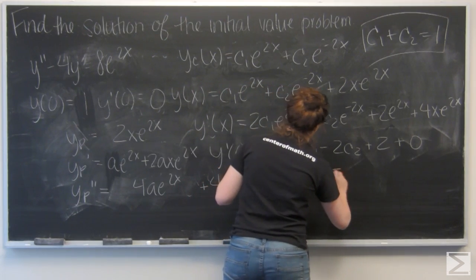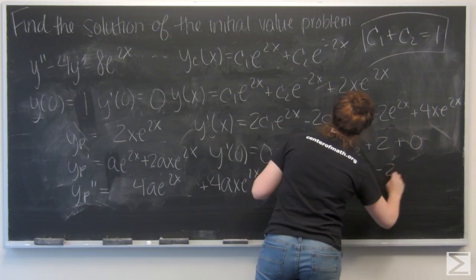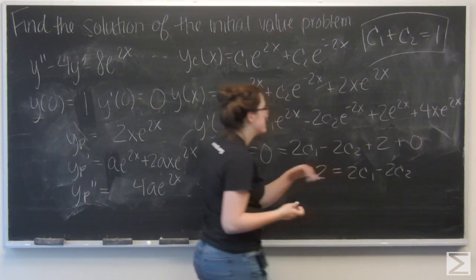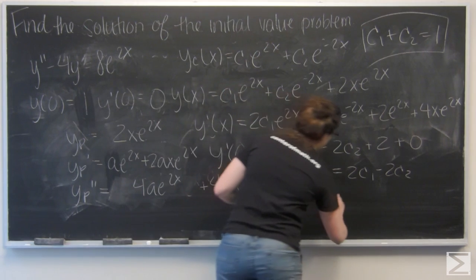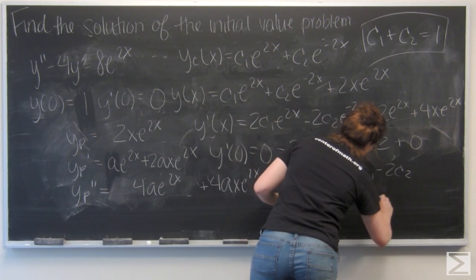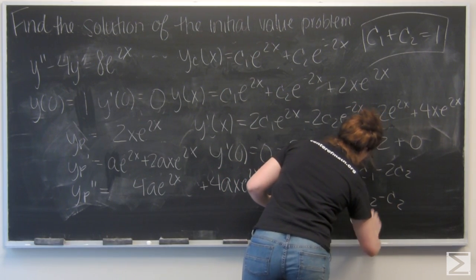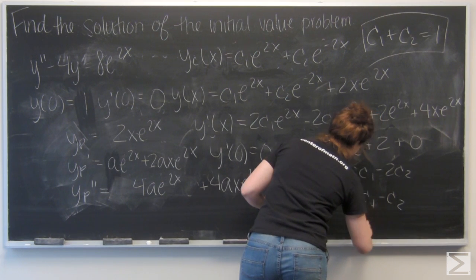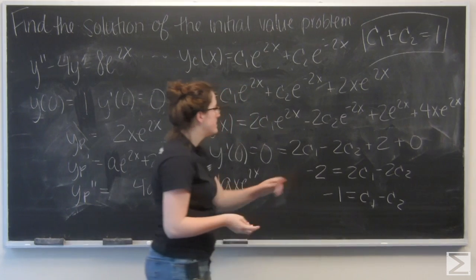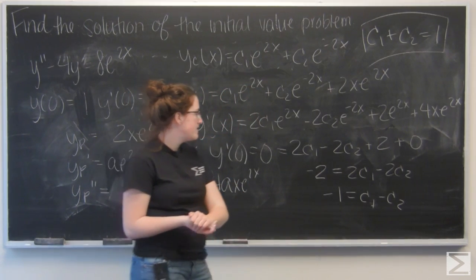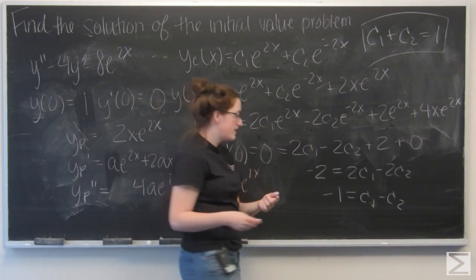Negative 2 equals 2c1 minus 2c2. I'm going to go ahead and divide everything by 2. I can use this to get c1 equals c2 minus 1.